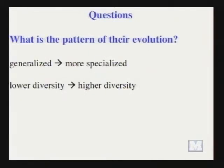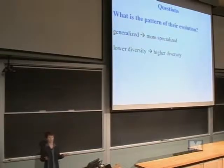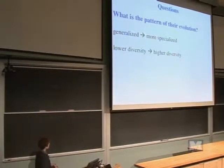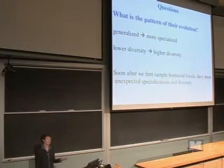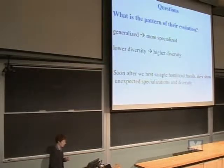Typically, when you first start to sample a group in the fossil record, what you find is that the early members tend to be more generalized than later members that become more specialized. You also tend to find lower diversity at first — only one or a few representatives — and then later in evolutionary time, you end up with more and more species. What I want to talk about today is that apes look like they're actually more specialized and more diverse than we initially anticipated.